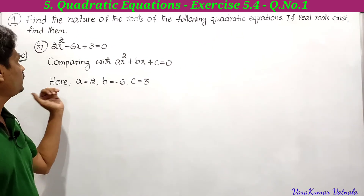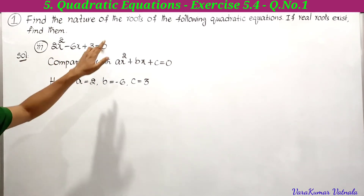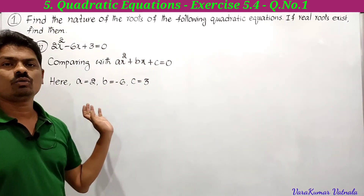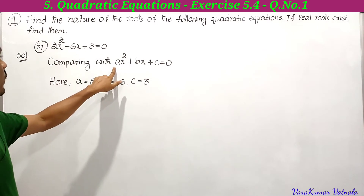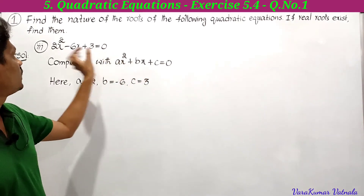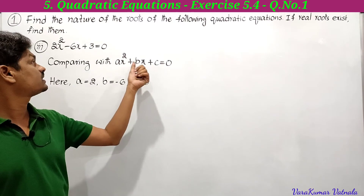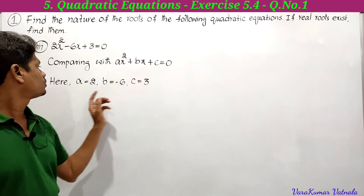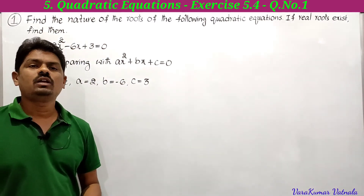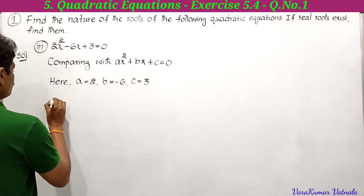For the third part: 2x² - 6x + 3 = 0. Comparing with ax² + bx + c = 0: the x² coefficient is 2, so a = 2; the x coefficient is -6, so b = -6; the constant is 3, so c = 3.